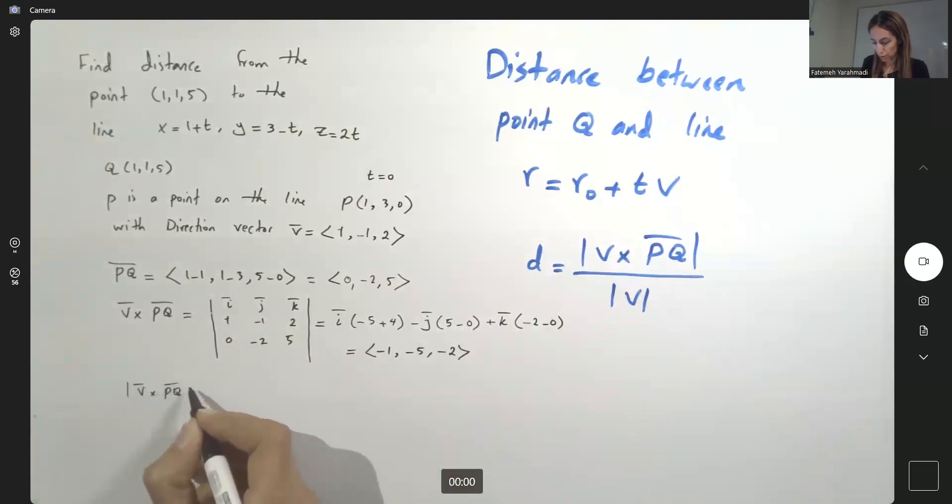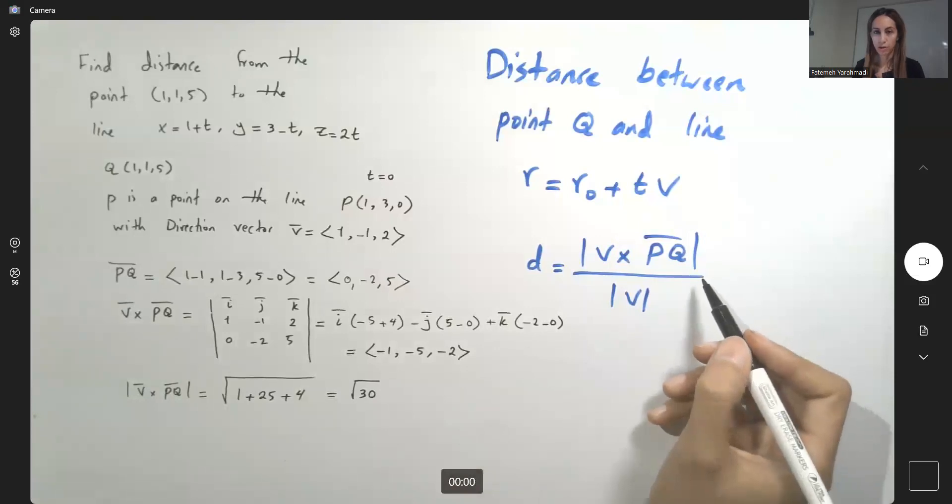V cross PQ, the magnitude is square root of negative 1 squared, 1 plus negative 5 squared, 25 plus negative 2 squared which is 4. So what do we have? We have square root of 29 plus 1, 30. So this is on the numerator.